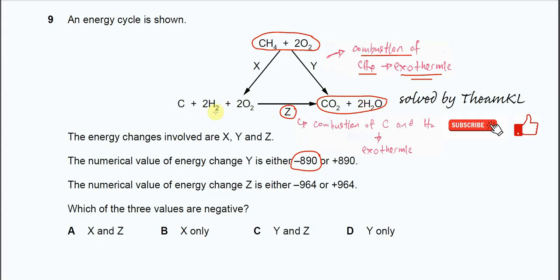Obviously this is a combustion of C and the combustion of H2 to form CO2 and H2O. Since this is a combustion of carbon and hydrogen, we are quite sure the enthalpy Z is also exothermic. Therefore it's negative 964 kilojoules per mole.